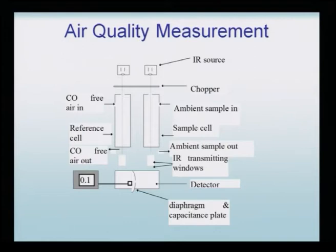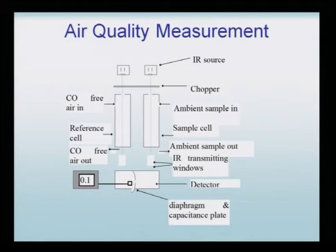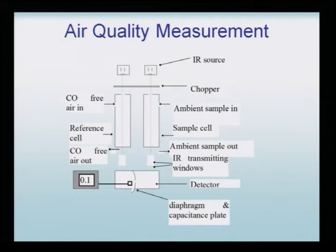This is how the instrument looks. There is an IR source and then two beams are made to pass. There is a chopper which puts only one type of IR radiation into the device. Carbon monoxide-free air is passed through one beam and through the other the ambient sample is passed. They go parallel, there is a reference cell, and it is passed on to the detector with a diaphragm. Finally, the analytical spectrum is derived from this measurement device.